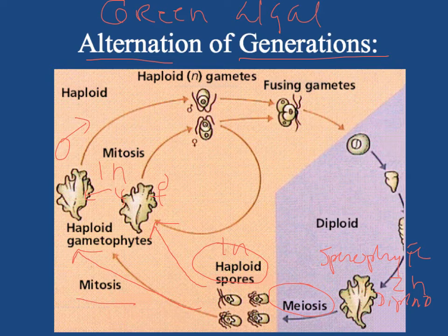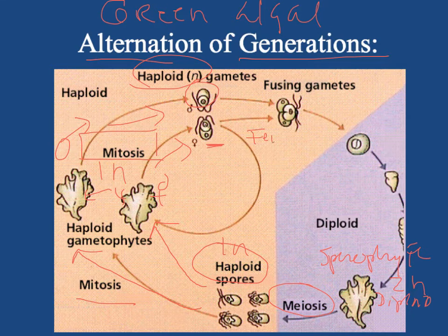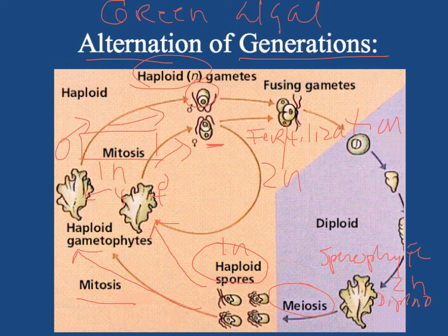The gametophytes went through mitosis to divide and grow up into adult forms. They then produce gametes via mitosis — a division that does not involve reduction in chromosome number — so the gametes are 1N or haploid. These happen to be female gametes on one side and male gametes on the other. When they fuse in fertilization, they become 2N, because we have N chromosomes in the male gamete and N chromosomes in the female gamete combining together to produce a diploid result.